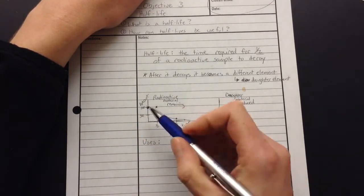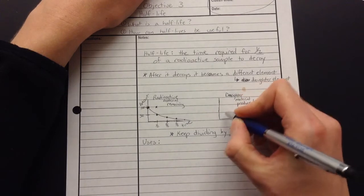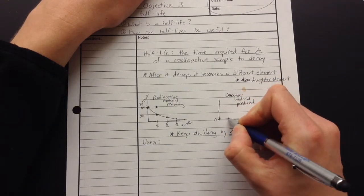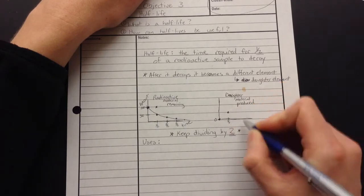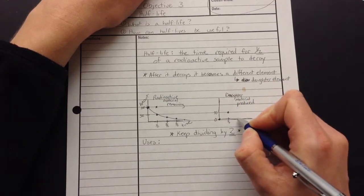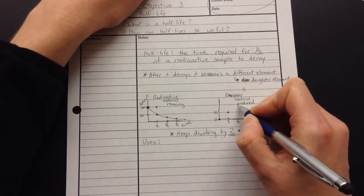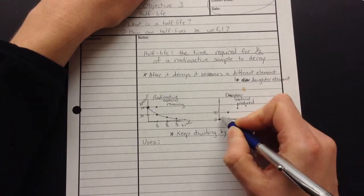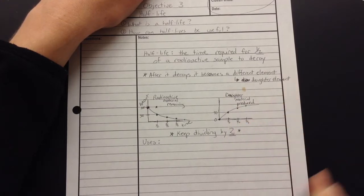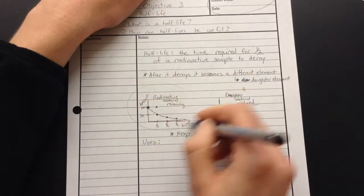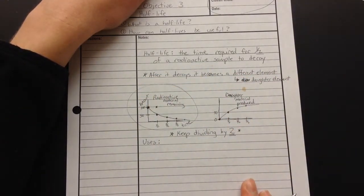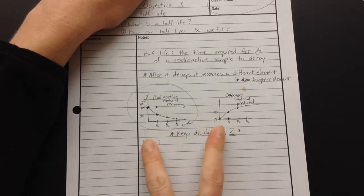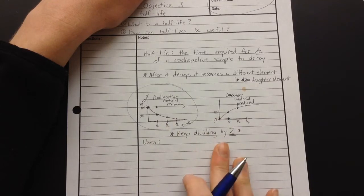Now, as that material turns into the daughter element, we start with none of that daughter element, and then after one half-life, we end up with the 50%. And then after a second half-life, we end up with a half more. And then after a third half-life, a half more. So this one kind of does the opposite thing. This is what we're looking at when we care about the radioactive material. We're watching that go down. But for some of the uses, we need to look at both of these so that we can look at some ratios.